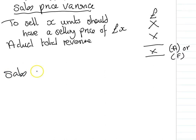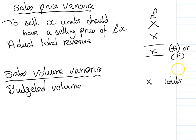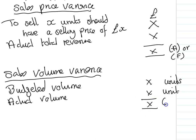The sales volume variance could be due to unexpected additional demand from customers, due to changes in consumer behavior, or consumers reacting to a change in our selling price. Alternatively, it could be due to production difficulties which meant that supply was restricted. We calculate it by starting with our budgeted volume — a certain number of units — and comparing that to our actual volume, which gives us an adverse or favorable variance in units.